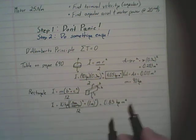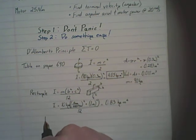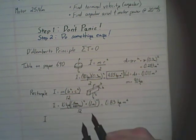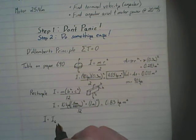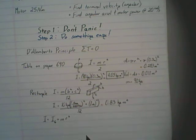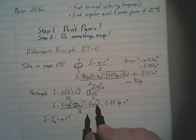The parallel axis theorem states that the mass moment of inertia of this object is equal to the mass moment of inertia of the object at its center of gravity, plus the mass of the object times the squared radius from the center of gravity of the mass of the object back to the center of rotation.